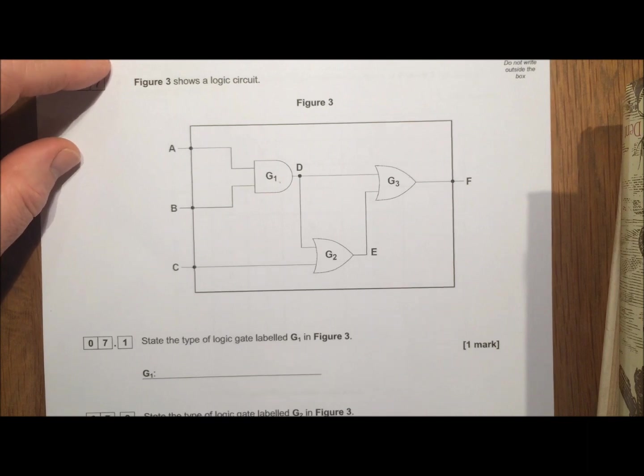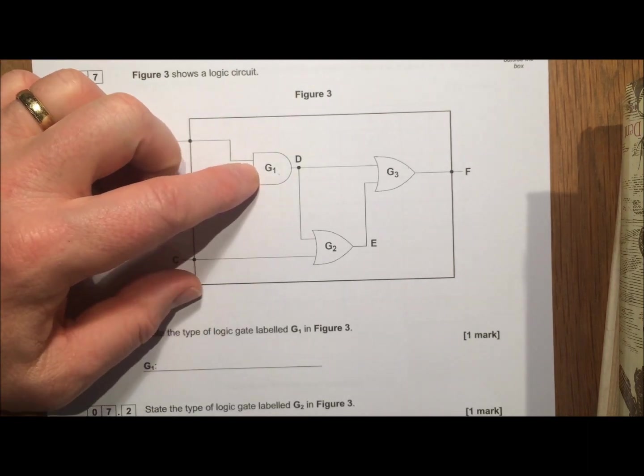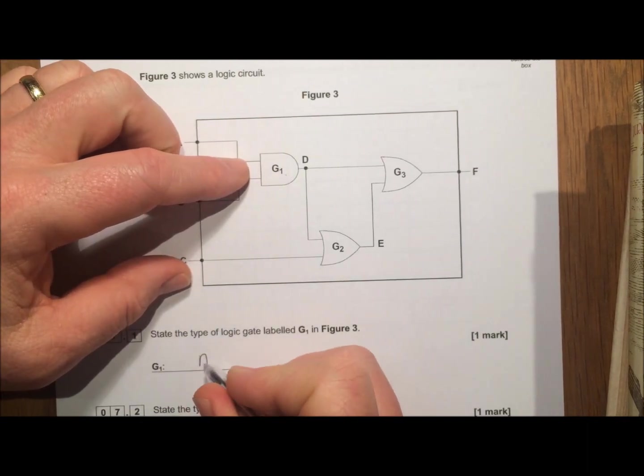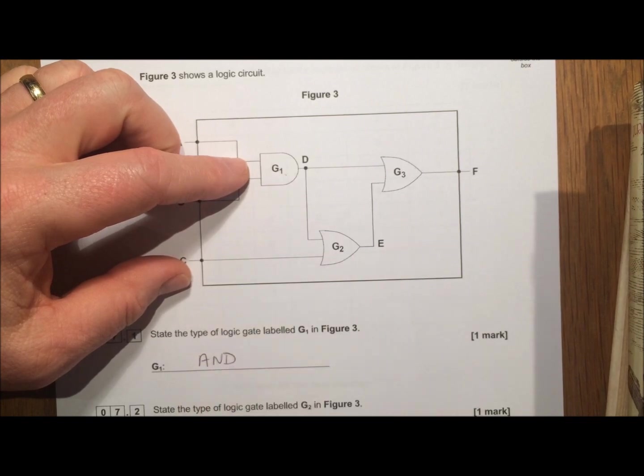State the type of logic gate labeled G1. That's this one here. So if we write down that's an AND gate, that's a mark.